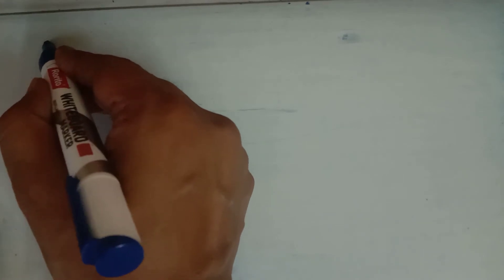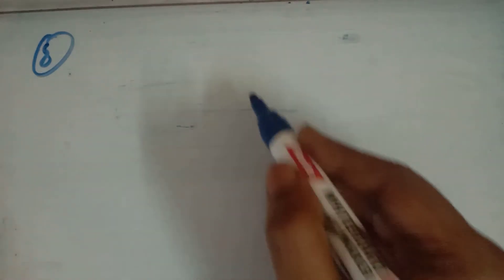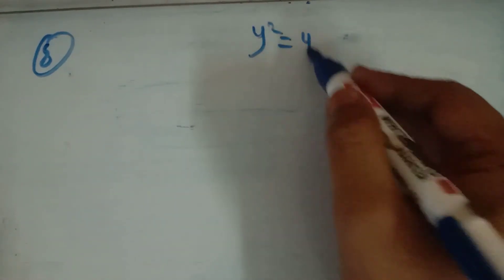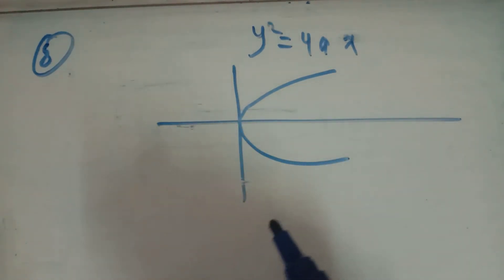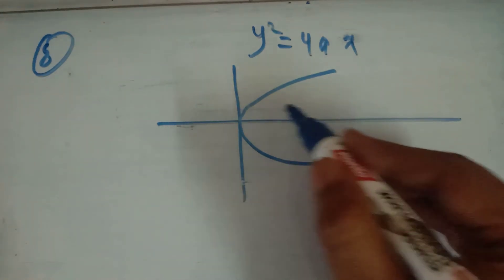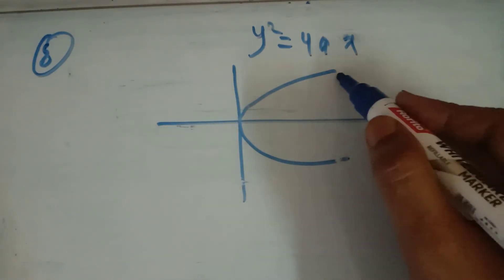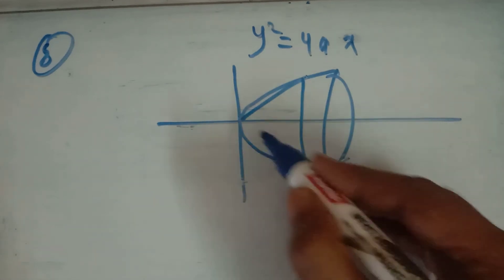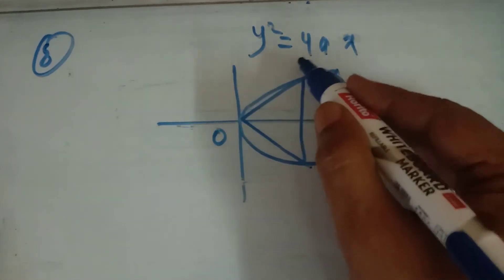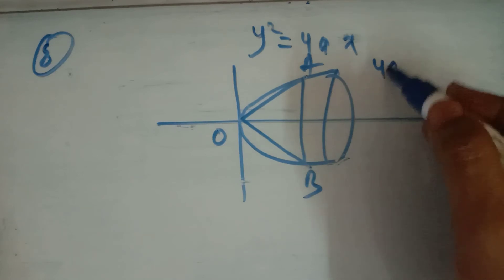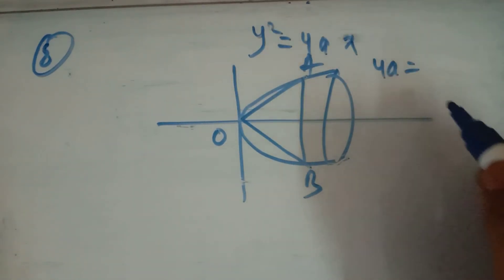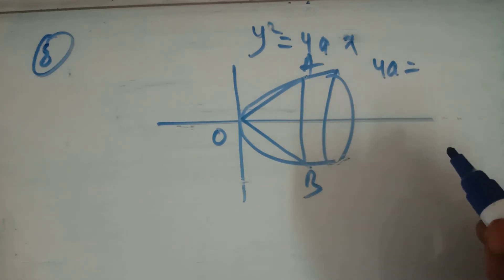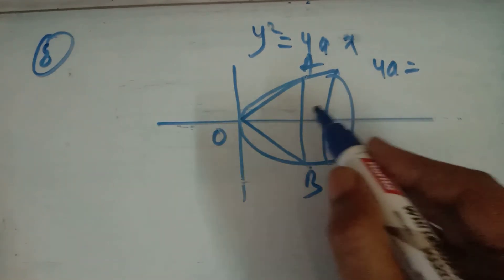In question number 8, an equilateral triangle is inscribed in the parabola Y² = 4X, with one vertex at the vertex of the parabola — एक equilateral triangle है, one vertex तो vertex पर ही है। Here 4A = 4, so A = 1. Let the length of the equilateral triangle be L.